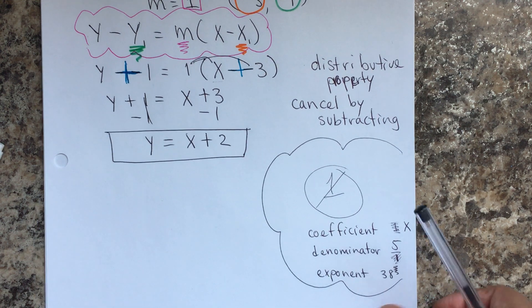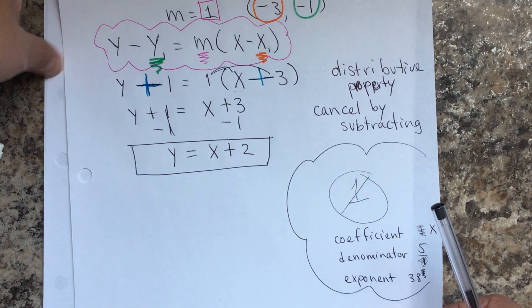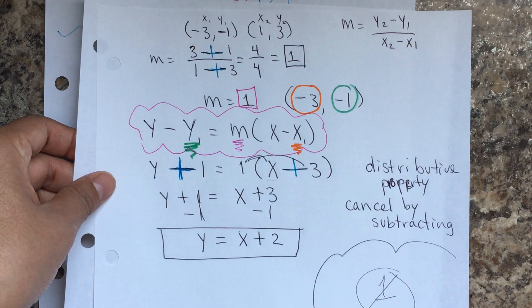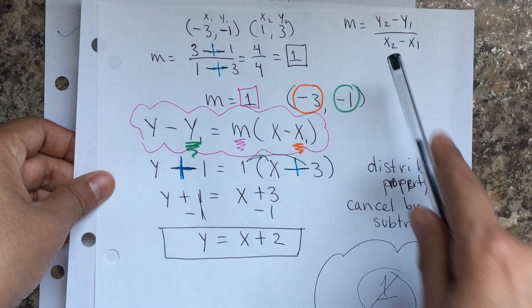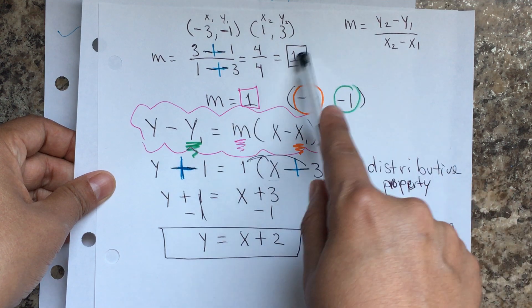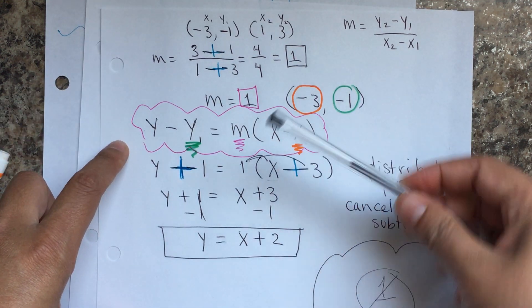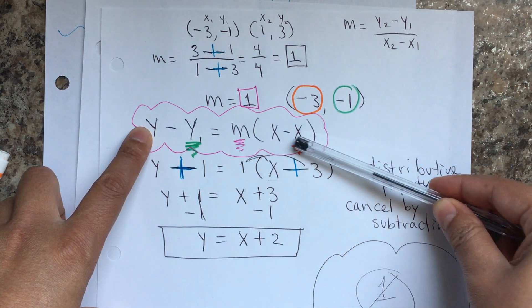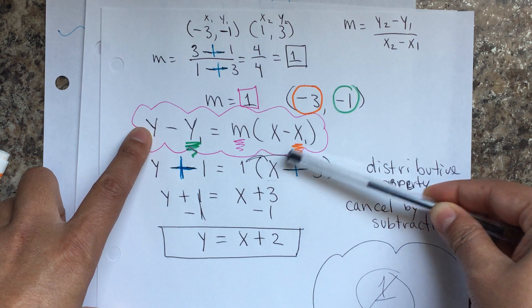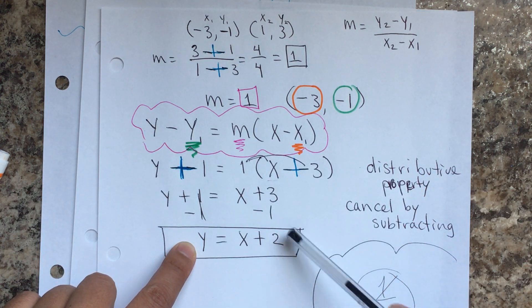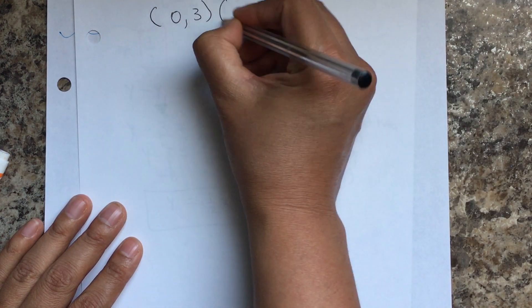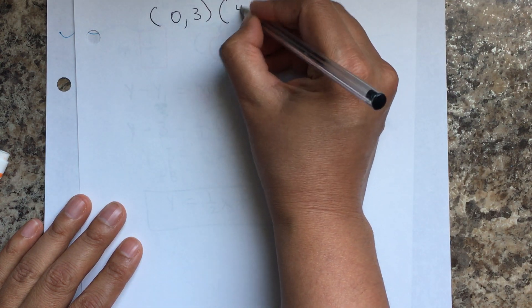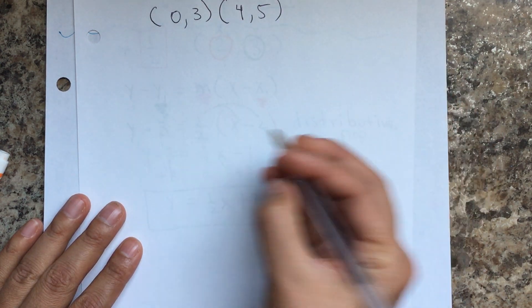Let's try one more example — pause it if you needed to copy that. Again, first you find the slope, then the second step is to use the slope-point formula to find the equation. So you have the points 0, 3 and 4, 5.